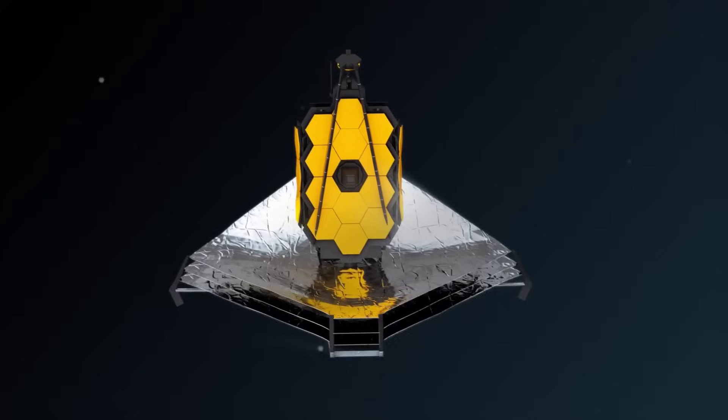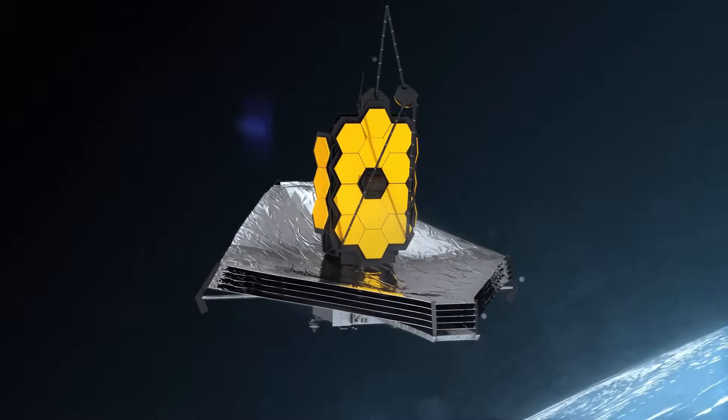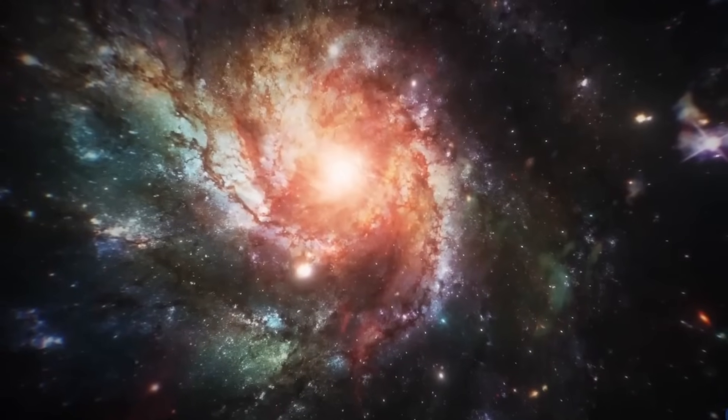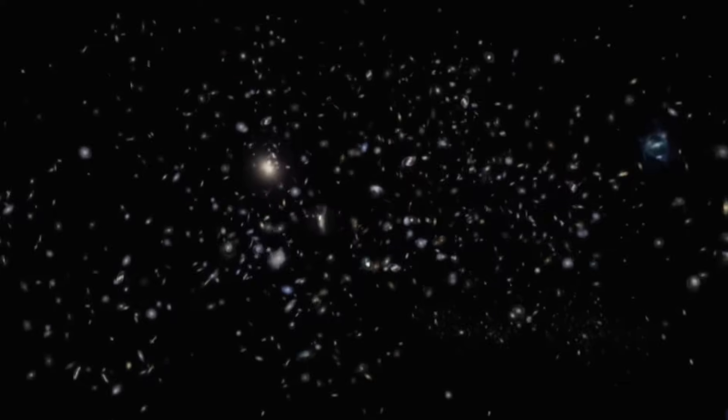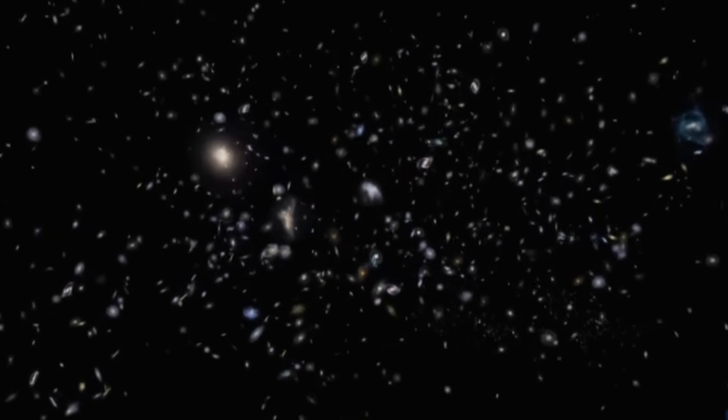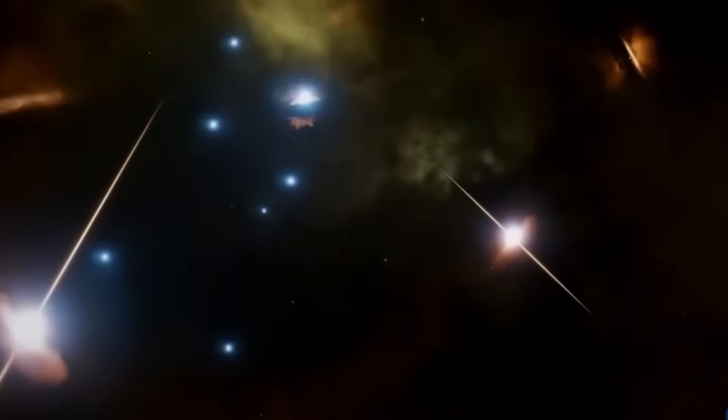In conclusion, what did the James Webb Telescope just spot in deep space? It found ancient, giant galaxies that shouldn't exist. Not yet, anyway. They're too massive, too organized, and too old to fit our current models of the universe.